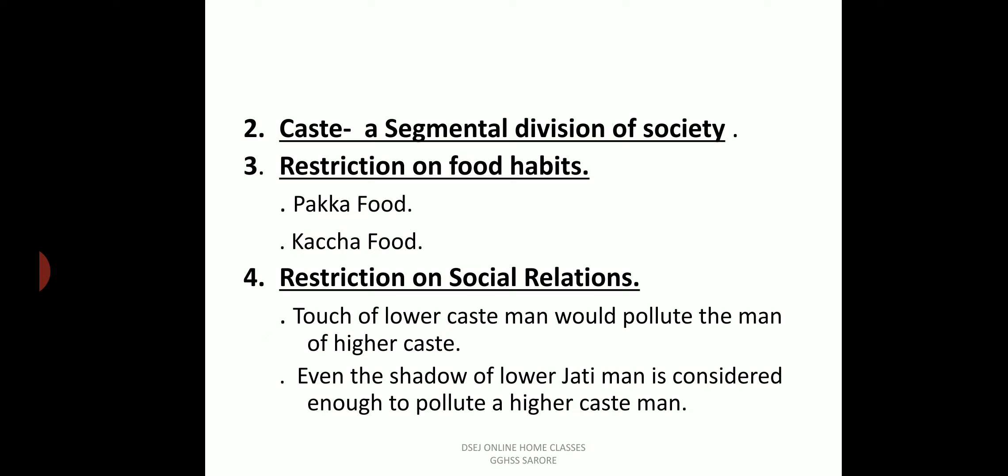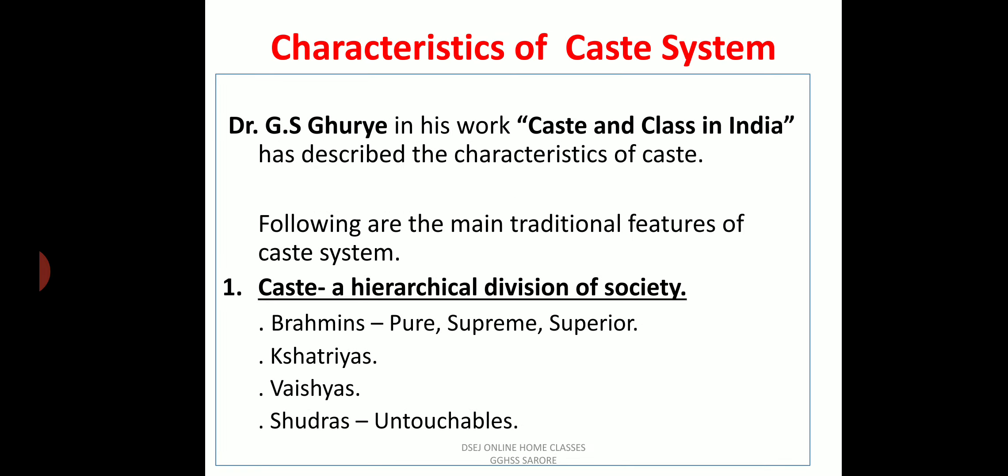The next characteristic is restriction on food. The caste system imposed certain restrictions on food habits. Two key concepts are 'paka food' — food prepared in ghee — and 'kacha food' — food prepared in water. The caste system has imposed certain restrictions on food habits of its members, which differ from one caste to another.